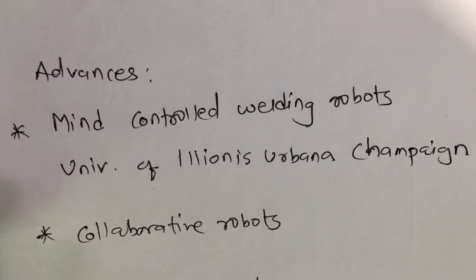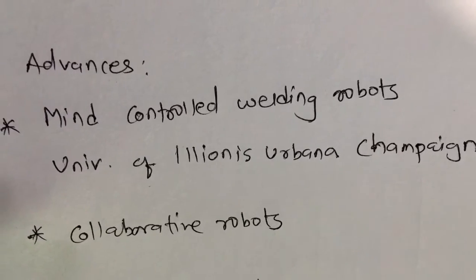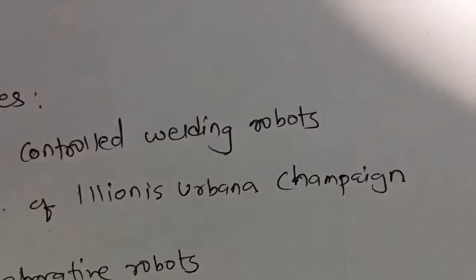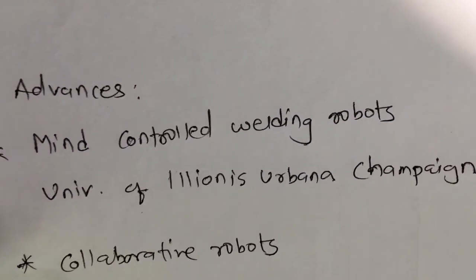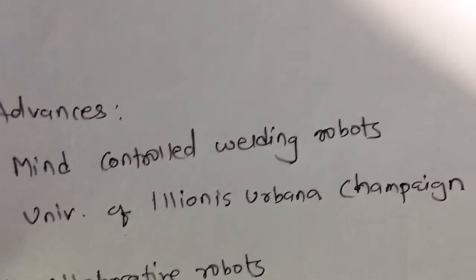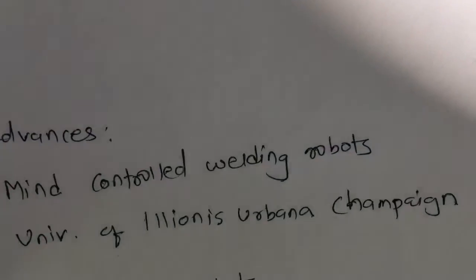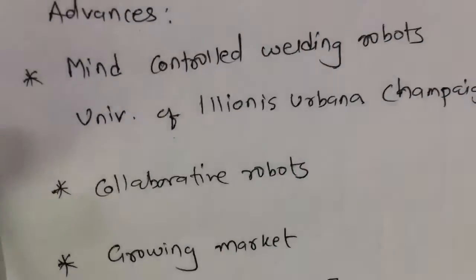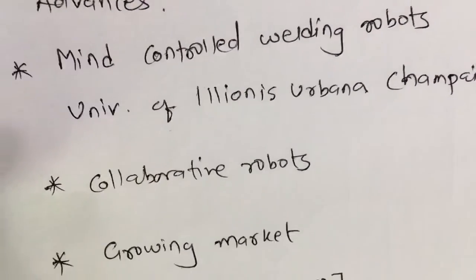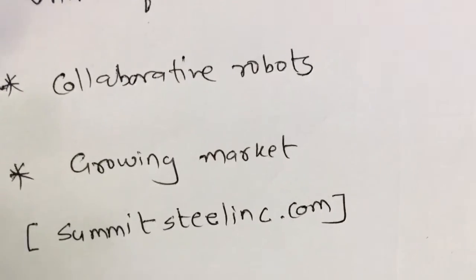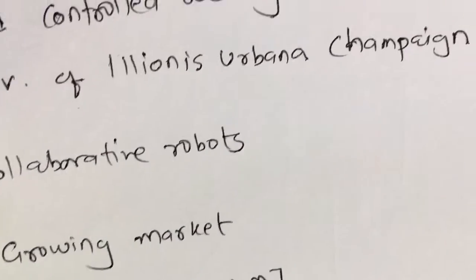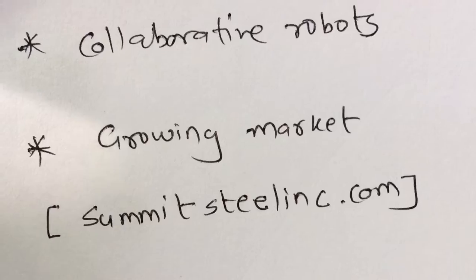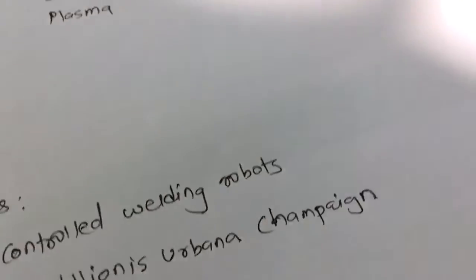There are notable advances in welding robotics. One example is the mind-control welding robot developed at the University of Illinois Urbana-Champaign, which uses a cap to control the robot without a PC. Collaborative robots are also capable of working alongside human beings, and there is a growing market for these applications. Further advances can be explored at summitsteelincorporation.com.